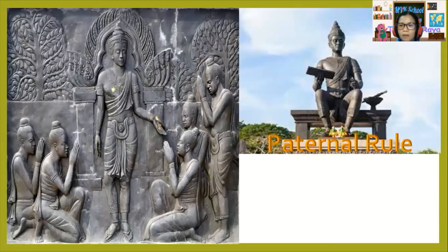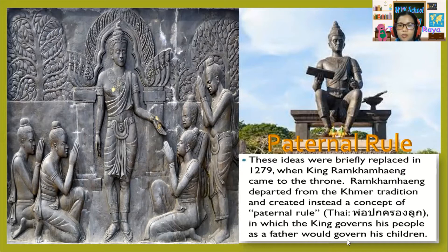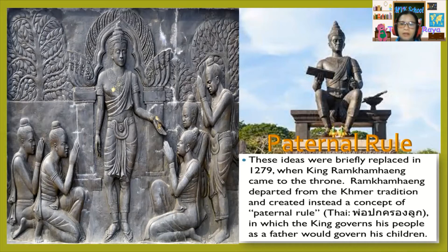Now, what is paternal rule? These ideas were briefly replaced in 1279 when King Ram Kamheng came to the throne. Ram Kamheng departed from the Khmer tradition and created instead a concept of what we call paternal rule, in which the king governs his people as a father would govern his children.